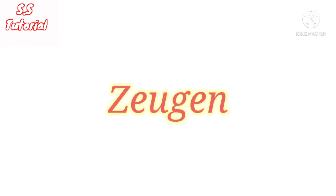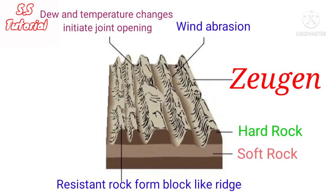Jyugen is nothing but a table-shaped area of rock found in arid and semi-arid regions, formed due to the erosional process of wind action. Jyugen forms in rocks that have horizontal beds of hard and soft rock with joints and cracks. In desert areas, these joints are made wider by the weathering and abrasion process of wind action. Loose material is transported away, and the remaining hard rock left standing is called Jyugen. They can be 30 meters high.